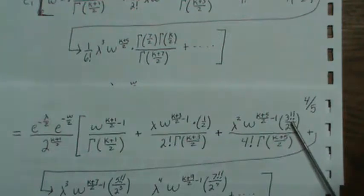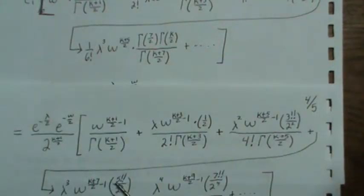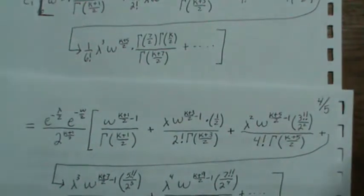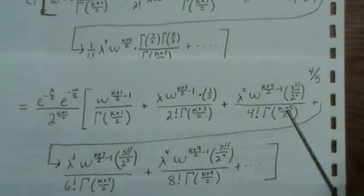And we have like 7 double factorial over 2 to the 4th, 5 double factorial over 2 to the 3rd. So each of those we have here.